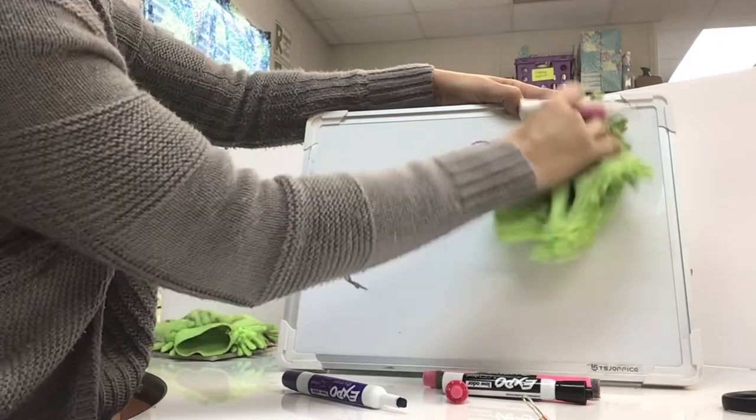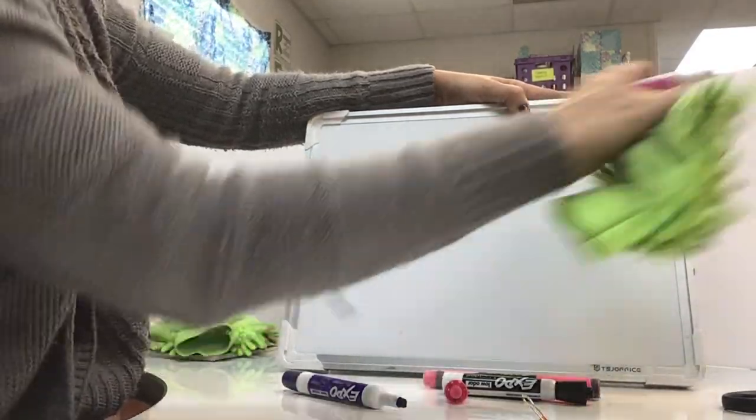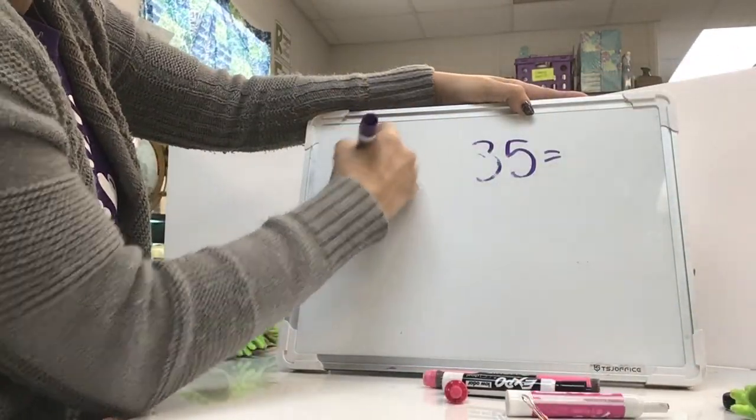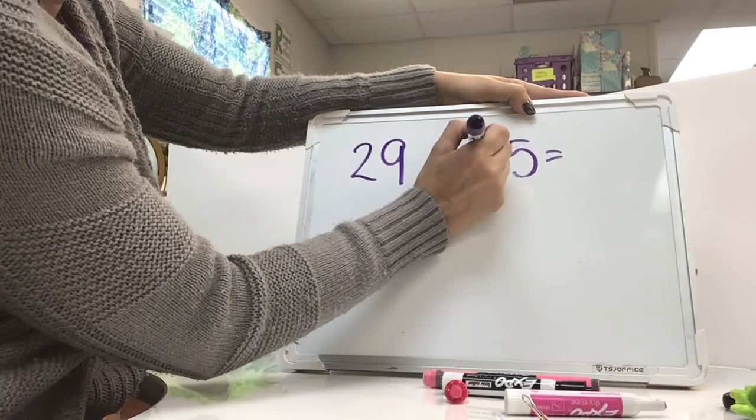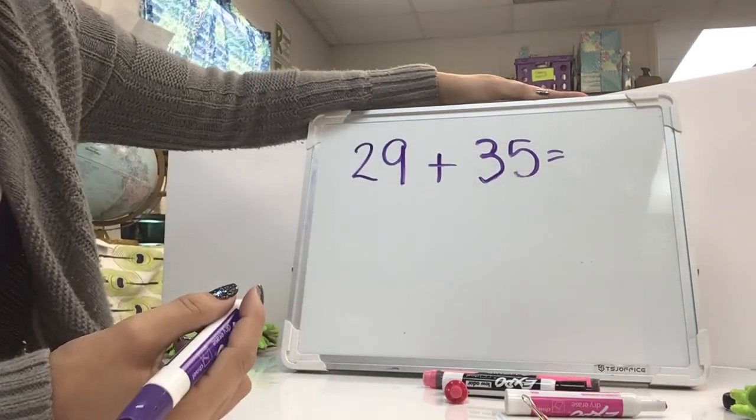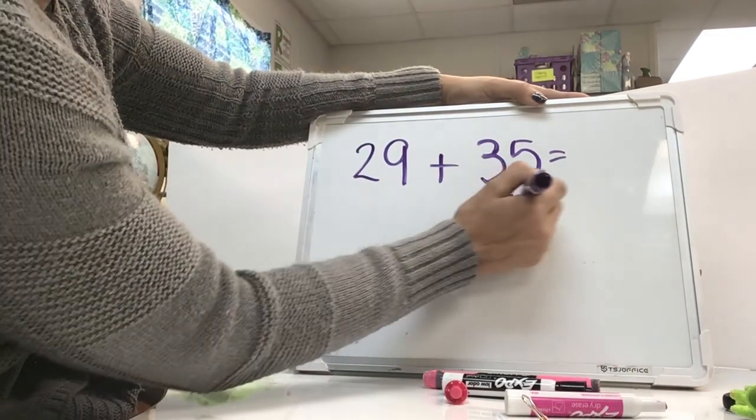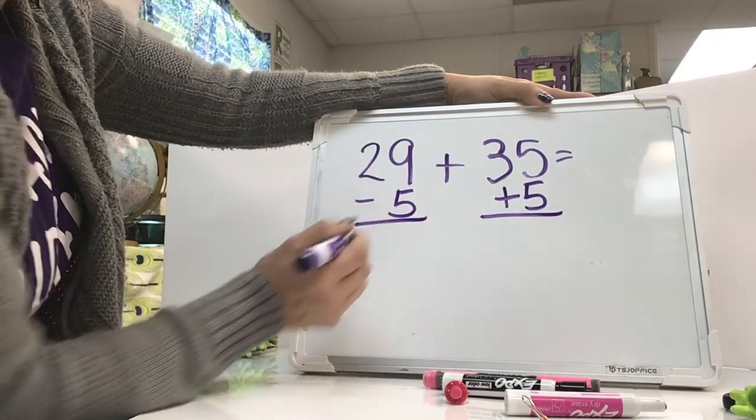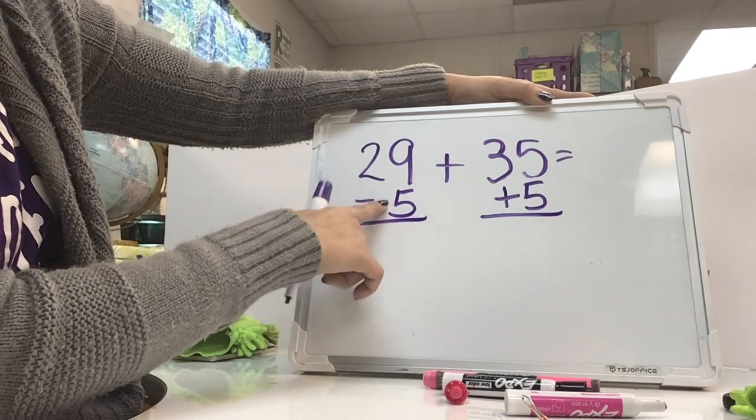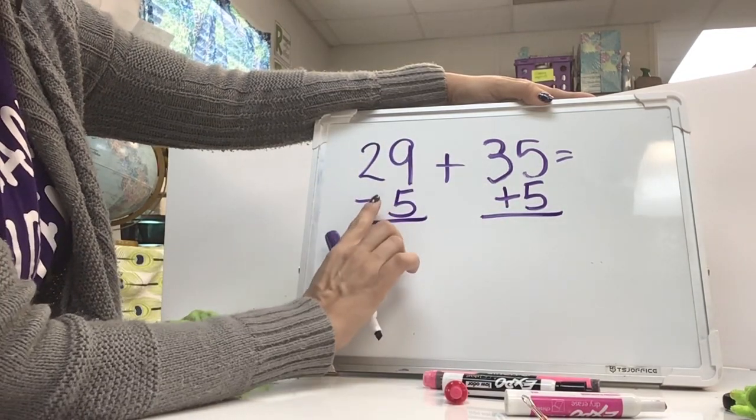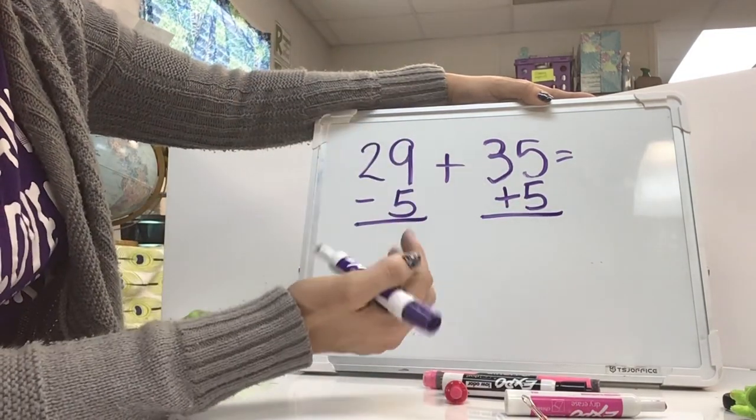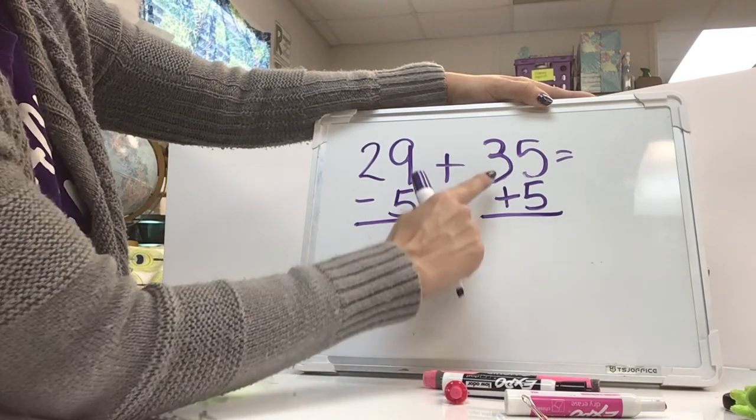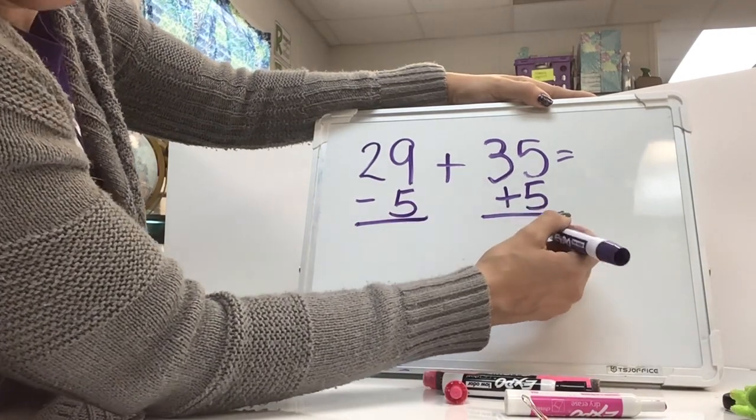I'm going to rewrite the 29 over here. If you wanted to do it another way, maybe you wanted to add plus 5 over here. And then you would subtract 5 on this side. So a minute ago I did plus 1 and minus 1 because I brought the 29 up to the next 10, which was 30. But now I'm going to bring this up to the next 10 and see if I get the same answer.